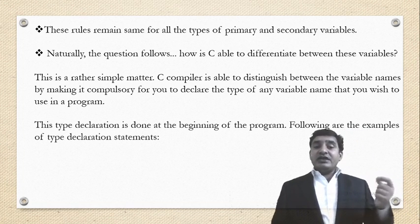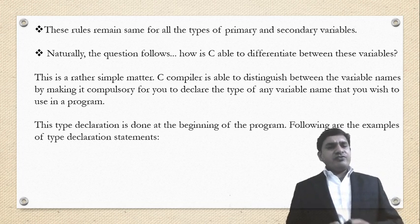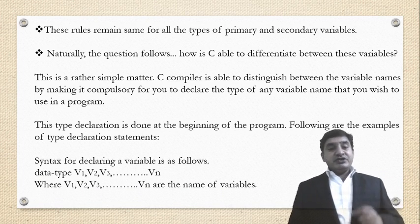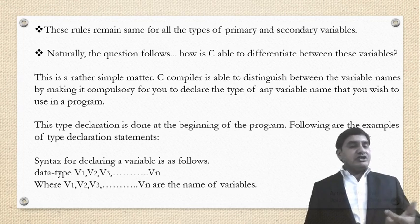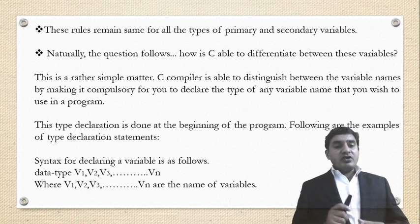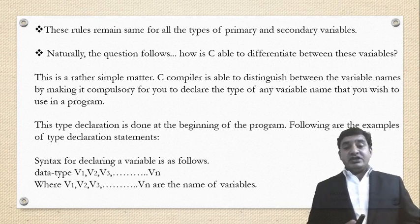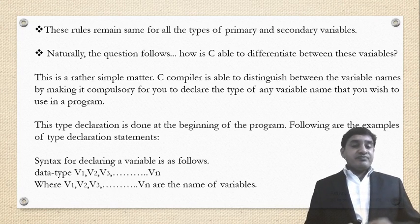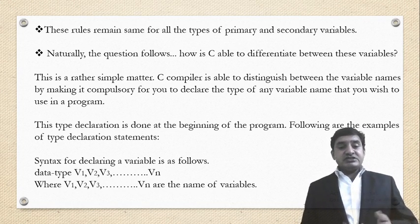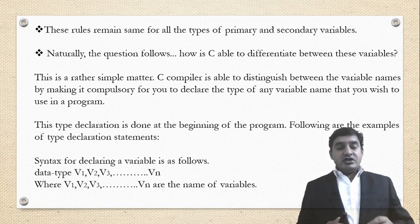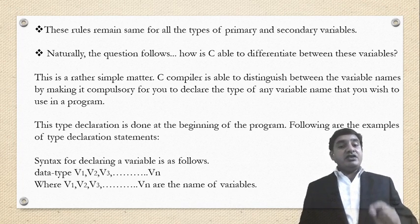We have to declare the variable at the beginning of a program using different data types. The type declaration is done at the beginning of the program. The syntax for declaring a variable is as follows: data_type v1, v2, v3, ... vn — where v1, v2, v3 are the names of the variables. To declare a variable, we require a data type and a variable name.